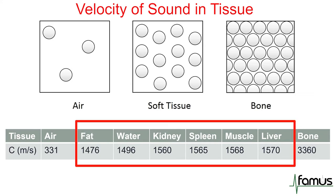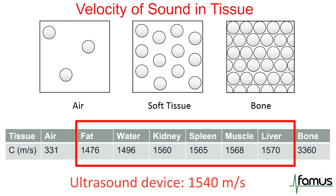Fat, water, kidneys, spleen, muscle and liver tissue velocities are all in the same range, while air and bone are very far out. The ultrasound device itself needs to use a velocity to calculate the depth of our signals, and it uses something pretty much in the middle between fat and liver.